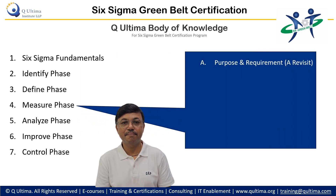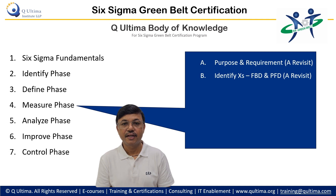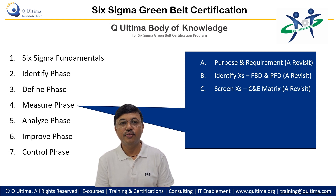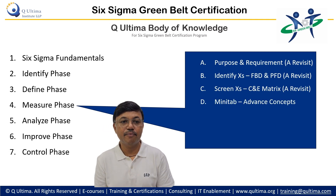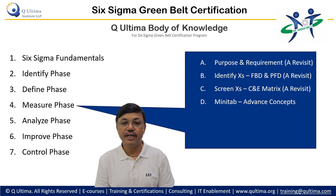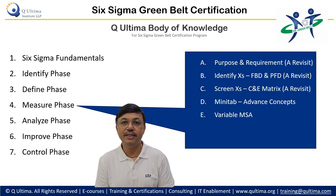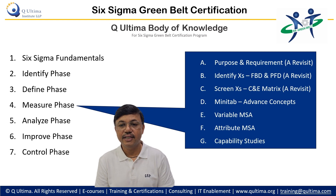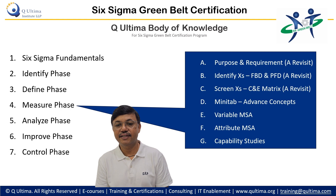In the Measure phase, purpose and requirements cover verifying the measurement system and stretch of targets. We will identify causes which can impact our project Y using tools like fishbone diagram and process flow diagram, then screen those causes by dropping irrelevant ones. Advanced Minitab concepts will cover data arrangement, importing and exporting data, and developing checklists. This is followed by variable MSA — gauge repeatability and reproducibility study — and attribute MSA covering attribute agreement study where attribute data validity is checked.